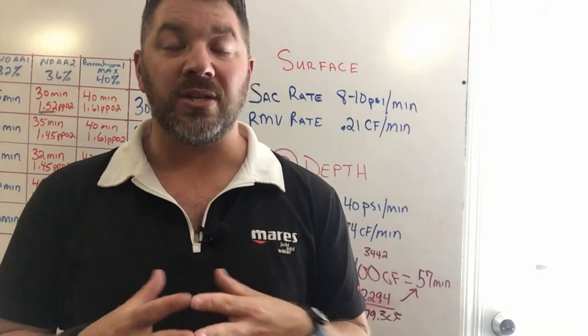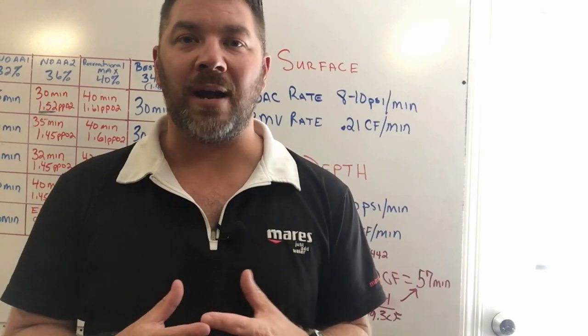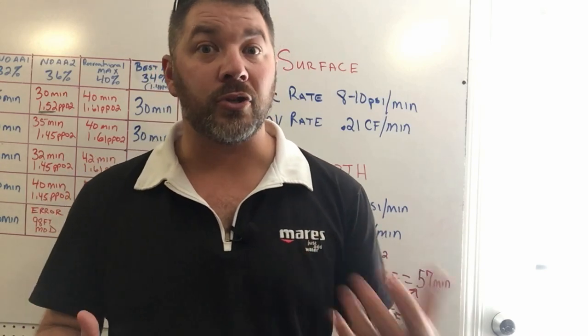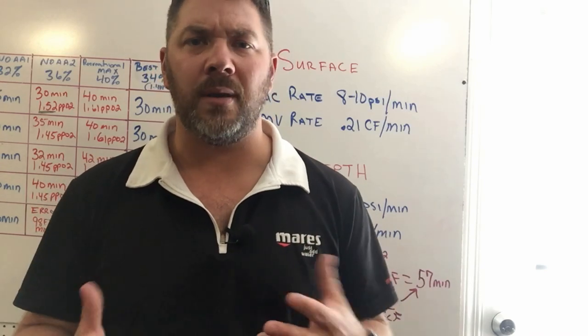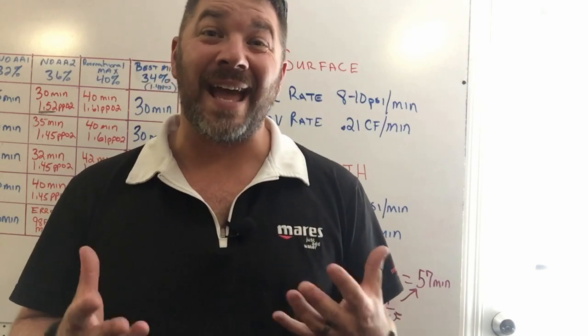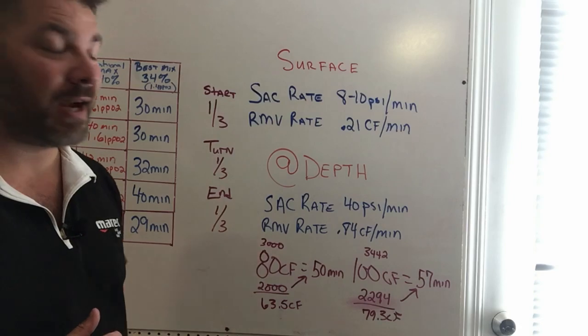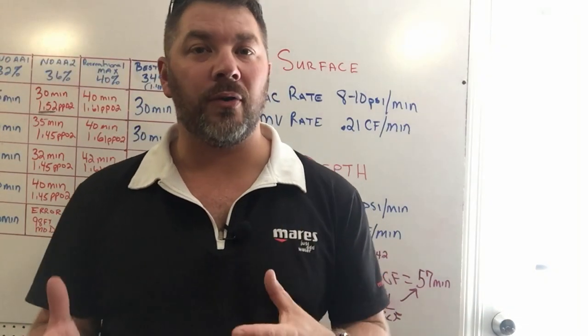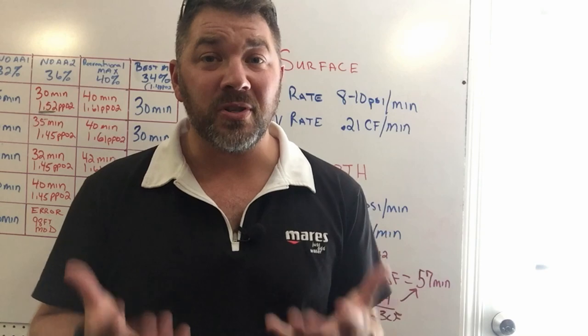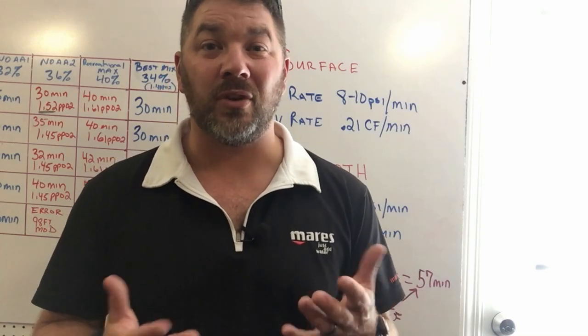It's all about my geographical location. If I'm in a warm tropical environment, maybe I'm in a 3 mil or a shorty or maybe I'm just wearing a rash guard in a bathing suit, I don't really need that extra weight with me so I would probably choose the 80 cubic foot there.